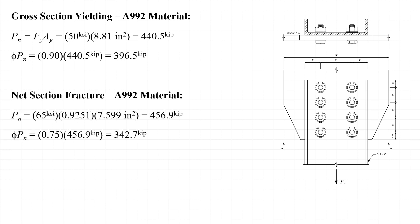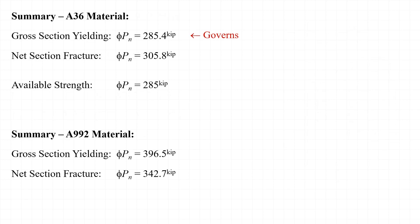Evaluating the net section fracture strength of the channel made out of A992 material, the nominal strength would be 456.9 kips, and the design strength phi times P sub n would be 342.7 kips. The lesser of those two strengths governs, so with the channel made out of A992 material, net section fracture governs instead of gross section yielding, and we have an available strength phi times P sub n equal to 342 kips.